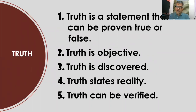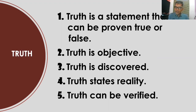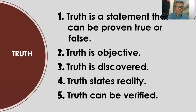Truth can be proven true or false — if our data or evidence affirms our claim to be true, therefore it is true; otherwise it is false. Number two, truth is objective — it is not based on our attitude, feelings, or emotion. Number three, truth is discovered — based on our evidence, our claim is found to be true; we discovered it is true because there are details that support our claim.